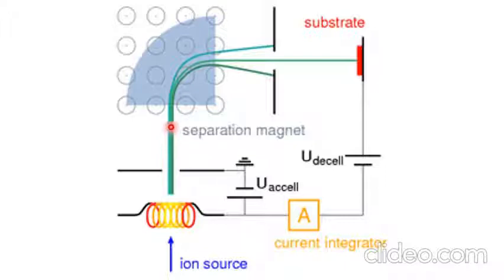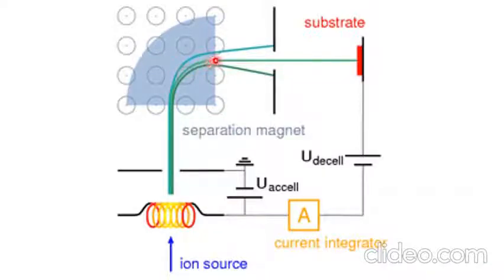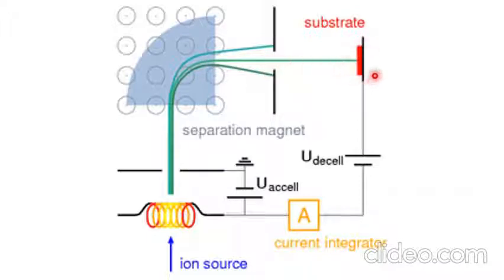The magnetic separator separates the ions on the basis of charge-to-mass ratio. For ion implantation, we need an ion with a specific charge-to-mass ratio — these ions will move straight ahead. Ions with a different charge-to-mass ratio will be deflected and blocked. The desired ions in the ion implantation system will move onto the surface of the substrate and are then implanted onto the surface and inside the bulk of the substrate material.